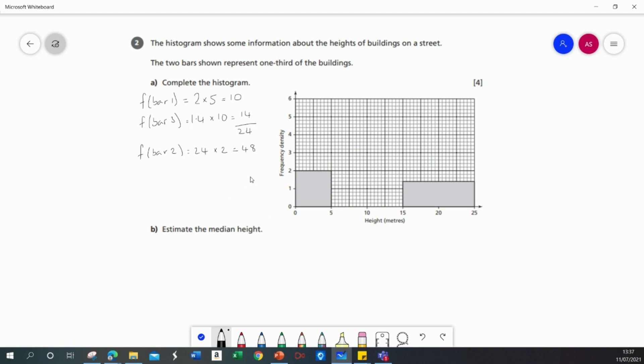Now to draw that onto the diagram I need the frequency density which will be the frequency divided by the class width of the bar which is 10. So the height of the second missing bar will be 4.8.